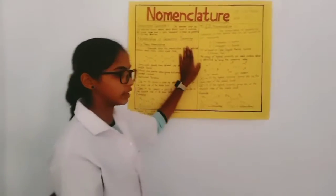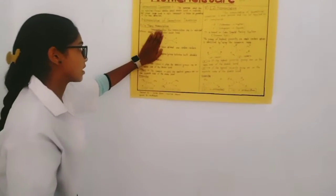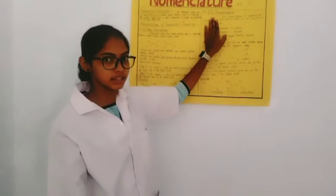Nomenclature of geometrical isomerism means that there are two parts: cis-trans nomenclature and second one is E-Z nomenclature.